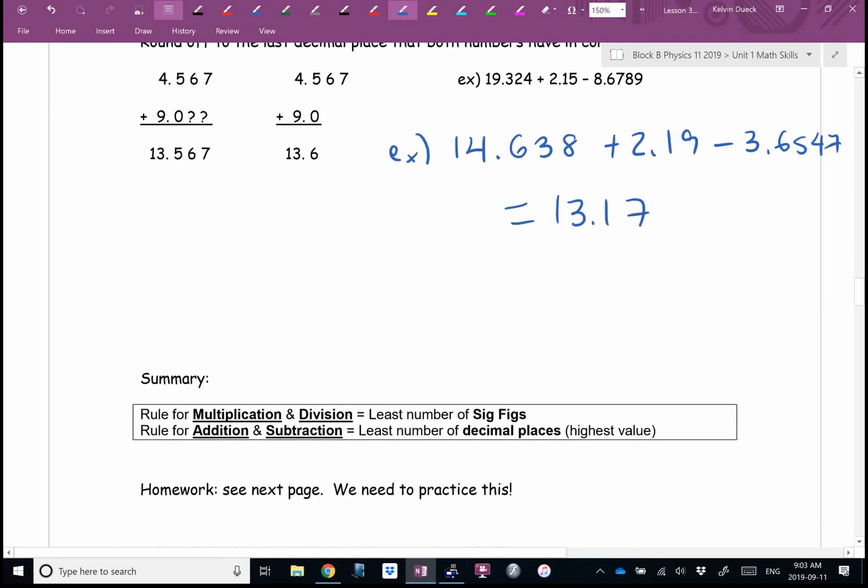Summary. Rules for multiplication and division: fewest number of sig figs in your data. Rules for addition and subtraction: least number of decimal places.